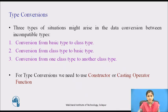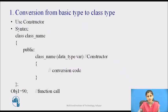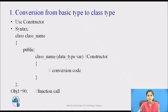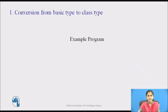The first case is conversion from basic type to class type. This conversion is accomplished with constructors. Constructors are generally used to initialize objects. The constructor used for type conversion takes a single argument whose type is to be converted. To convert from basic type to class type, the left-hand operand of the assignment operator is always a class object. We can also accomplish this conversion using an overloaded assignment operator. Let's see a program to convert basic type to class type.